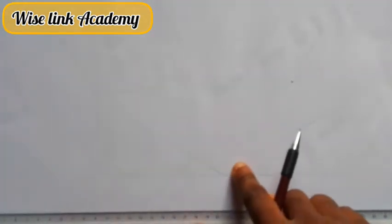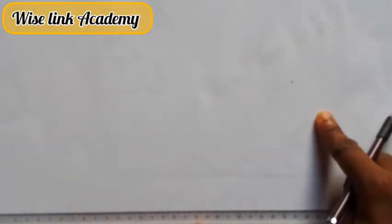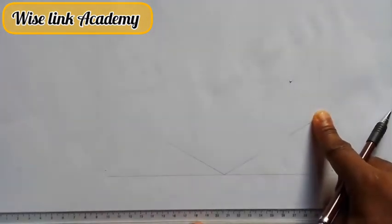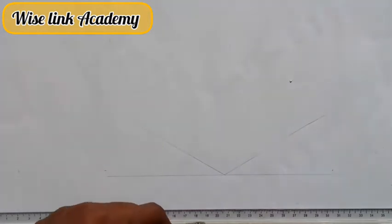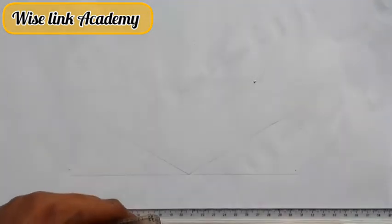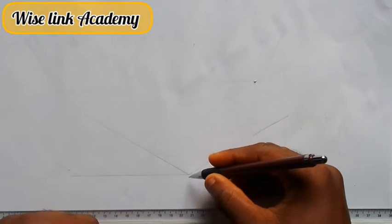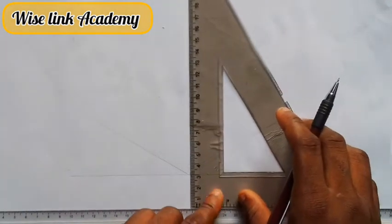It simply means the angle from this point to this point is 30 degrees. My next task now is, at this point, draw a vertical line upward.